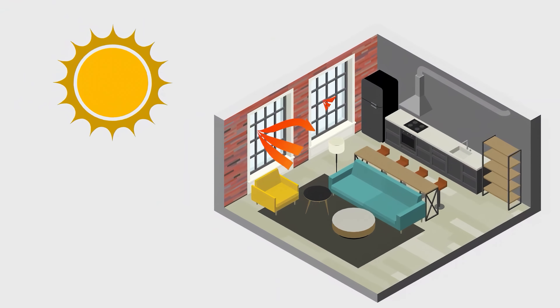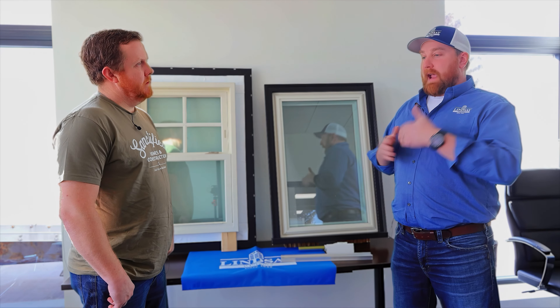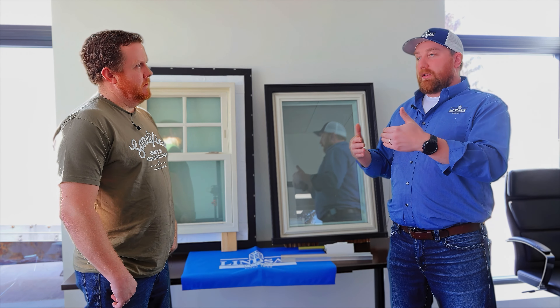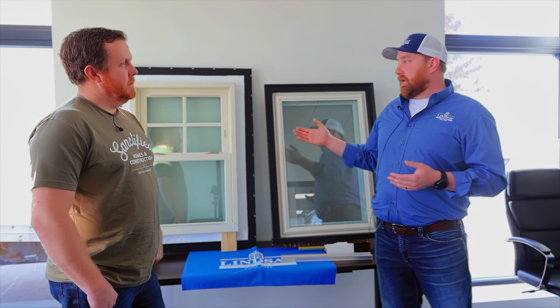Solar heat gain is how much of that ultraviolet light — sun energy — comes through the window. Think of a cat sitting in front of a window on a sunny day: how warm are you getting from that solar energy? You can't always have your cake and eat it too. You can add more low-E layers and get your U-value down, but it's also going to bring your solar heat gain down. That might be great if you're in Florida, but up here in winter we want to be that cozy cat enjoying the house warming up in the sun.